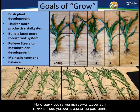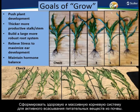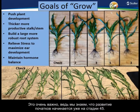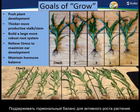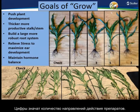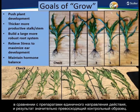Moving to Grow: our goals were to push plant development, create a thicker more productive stalk for storage and nutrient mobility, build a larger more robust root system to extract soil nutrients, relieve stress to maximize ear development — because at V4-V5 the number of rows around is already being set — and maintain hormone balance to keep the plant pushed. Again, two and three modes of action show significant improvement over untreated checks.